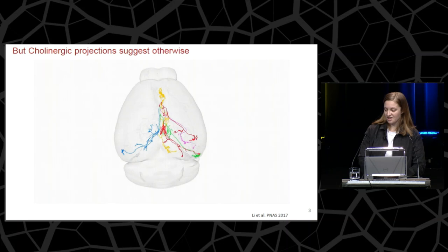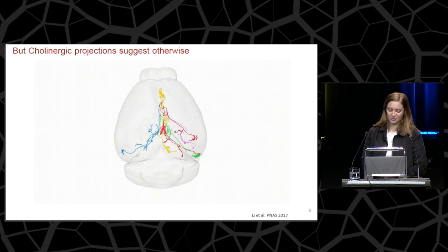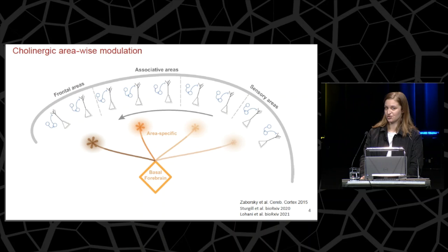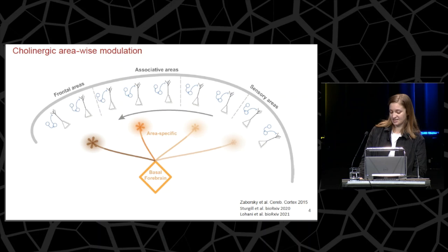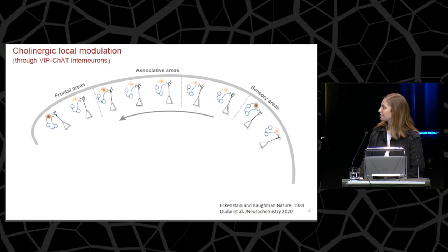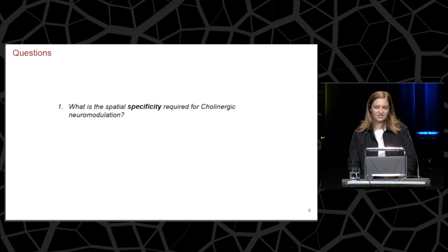This view was initially supported by experimental evidence, but as experimental methods grew in precision, this revealed a more structured organization of cholinergic projections, perhaps suggesting that this modulation could be an area-wise phenomenon. This is also supported by recent work from the Cardin lab showing heterogeneous modulation of acetylcholine across cortical areas. In addition, we've also known for a couple of decades that there could be a local source of acetylcholine in the cortex coming from a subtype of VIP interneurons, which have been recently shown to release acetylcholine.